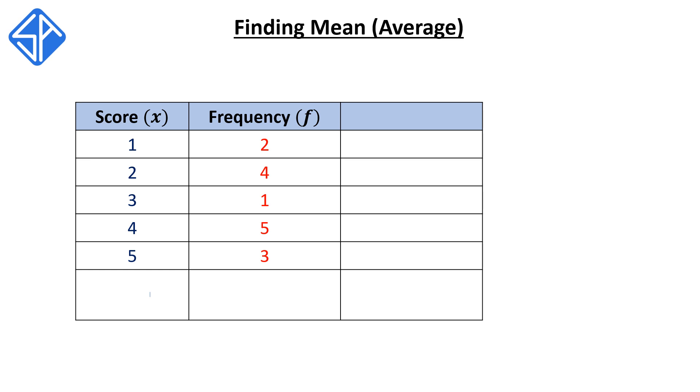To help us understand what each of the columns means and how all these numbers fit together, we're going to use the analogy of marks obtained by students in an exam. Our first column is called the score column, denoted with the variable x. We want to think of this as the possible scores in this exam.